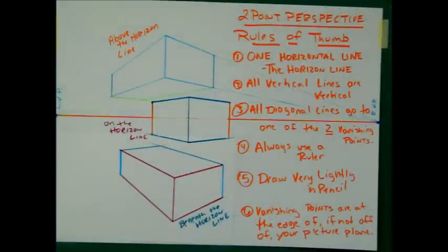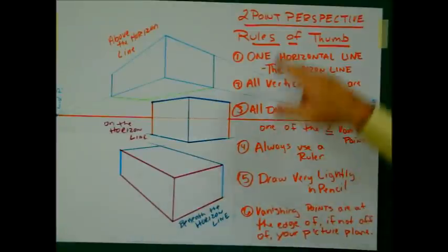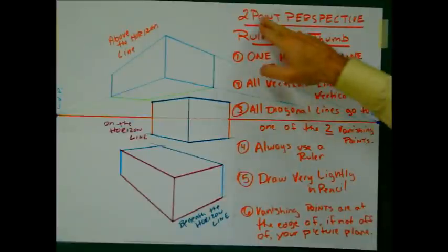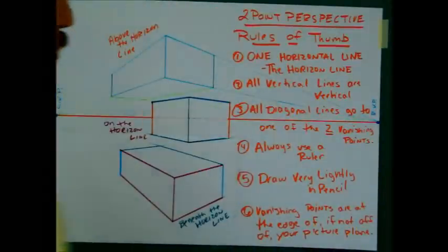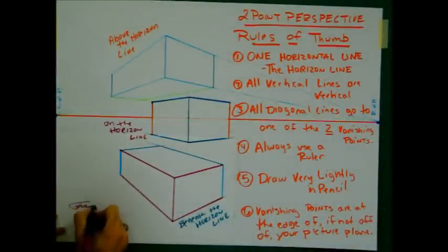Just by knowing these basic aspects of drawing these three cubes, there's a lot you can do. We can draw steps, ramps, and we're going to put windows in. So if you just keep these rules of thumb in mind when drawing two-point perspective, you'll have no problem drawing basically anything you want. Back this up, take a look at it, draw anything you want. Thanks.